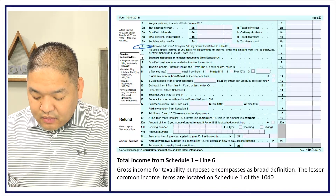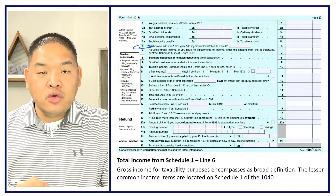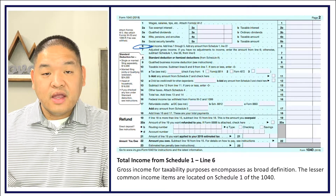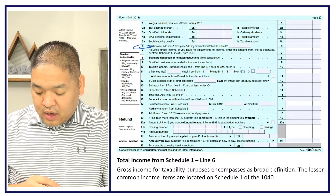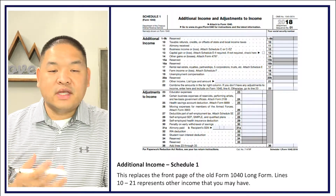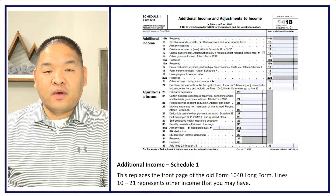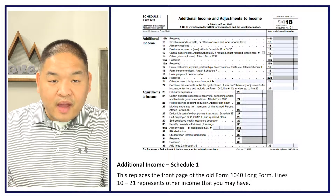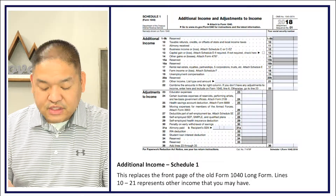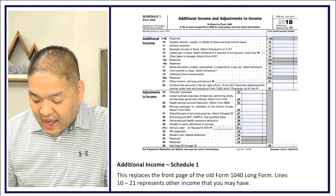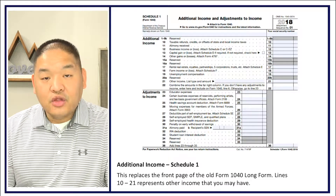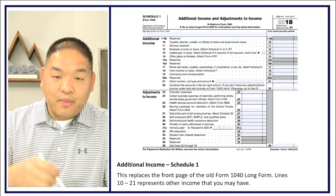Line 6 pulls total income from Schedule 1 — a new schedule created when the IRS simplified the 1040 form. Schedule 1 captures additional income items such as alimony, taxable refunds, business income, gains and losses, rental real estate, farm income, and unemployment compensation. You add all those up on Schedule 1 and the total transfers back to Line 6 of the 1040. The IRS also leaves reserve lines for future legislative changes.